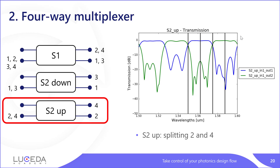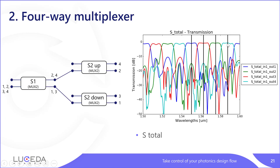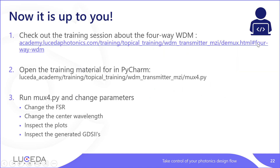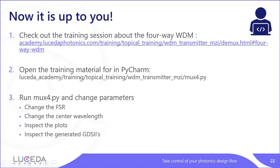We can now look at the simulation of the total circuit — our circuit has split the frequencies into four different channels. Just like for moocs2, you can look at this training session on Lucida Academy, or open the training material moocs4.py in PyCharm. Once again, you can change the FSR, change the center wavelength, inspect the plots, and try to understand what is going on inside the circuit.